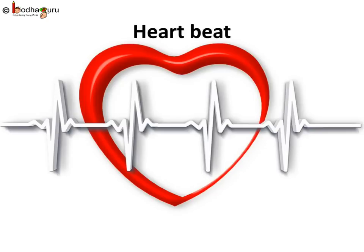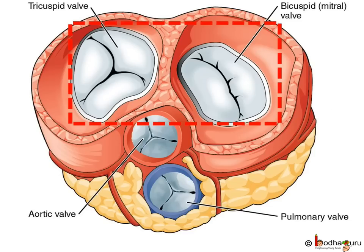Now, you must be wondering what is the rhythmic sound we get from a heart. Those sounds are caused by the closing of valves. As we know, valves are there to prevent blood from flowing back or in the reverse direction. The first sound of the heart is caused by the closure of the atrioventricular valves, i.e., the closure of the mitral and tricuspid valves.